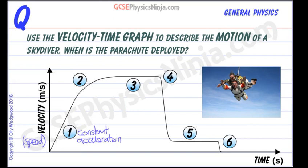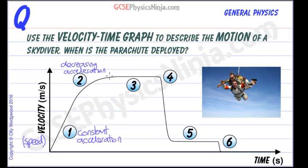What about at two? Here the speeding up is getting less, and what's happening is that the air resistance, as the skydiver falls faster and faster, has a greater effect and slows down the skydiver's fall a little bit. So here we've got a decreasing acceleration, and that acceleration decreases until it stops completely.